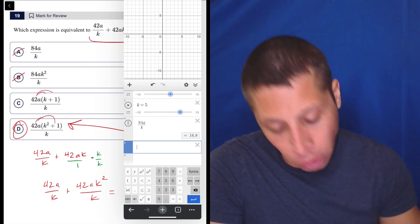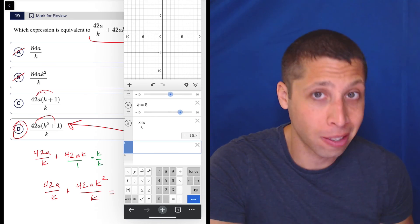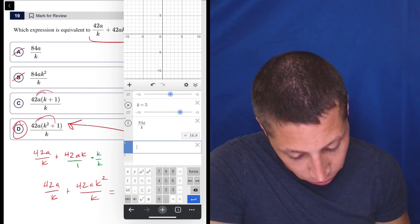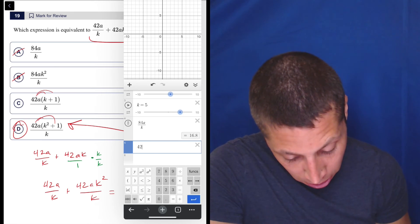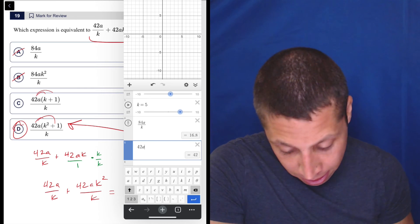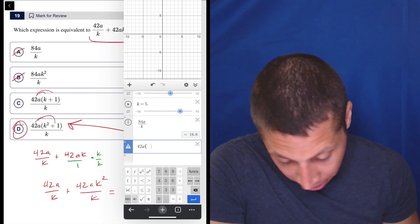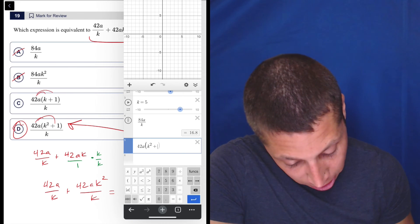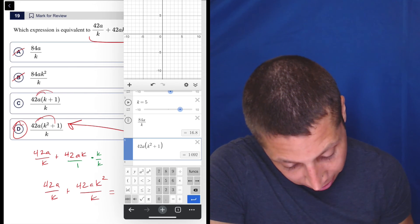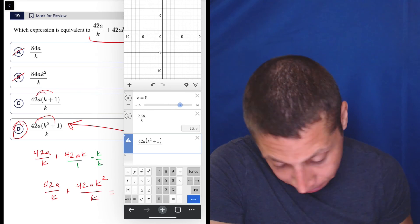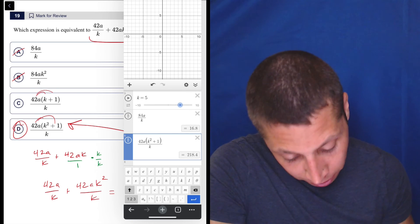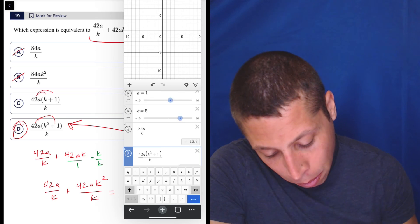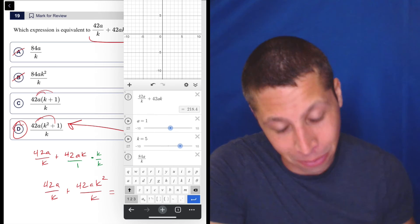So I'm not going to go through all the choices. We would need to because it's possible that we've got to change the values a lot. But if I just do the one we have, so that's 42, a times k squared, k squared, this is boring, plus 1, close the parentheses, and divide by k, we get 218.4. And let's go back to the top, 218.4.